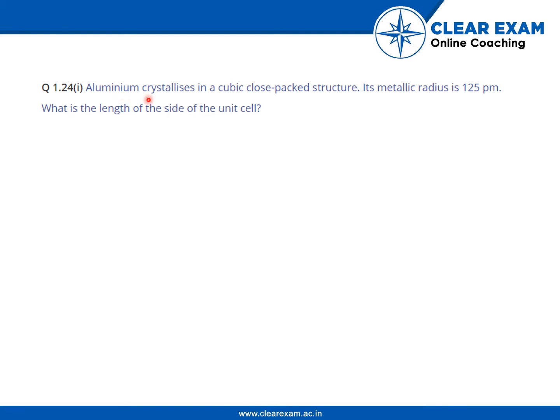The question is: aluminum crystallizes in a cubic close-packed structure. Its metallic radius is 125 picometer. What is the length of the side of the unit cell? Since it is a CCP structure, or cubic close-packed structure, we have this relation between a, the side length, and the radius.